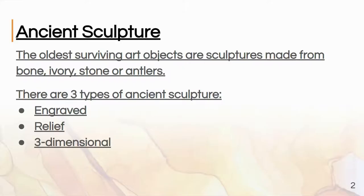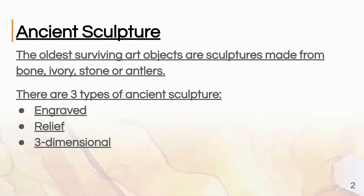When we talk about prehistoric art, the first thing we need to discuss is ancient sculpture. Ancient sculpture is the oldest surviving art form that we have. These are typically made of really hard materials — bone, ivory, stone, antlers. Today we're going to look at a couple of different types of art.